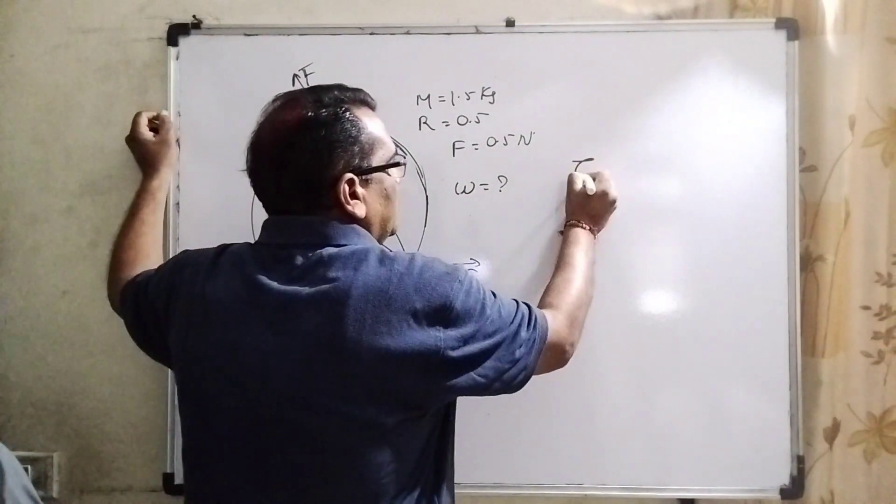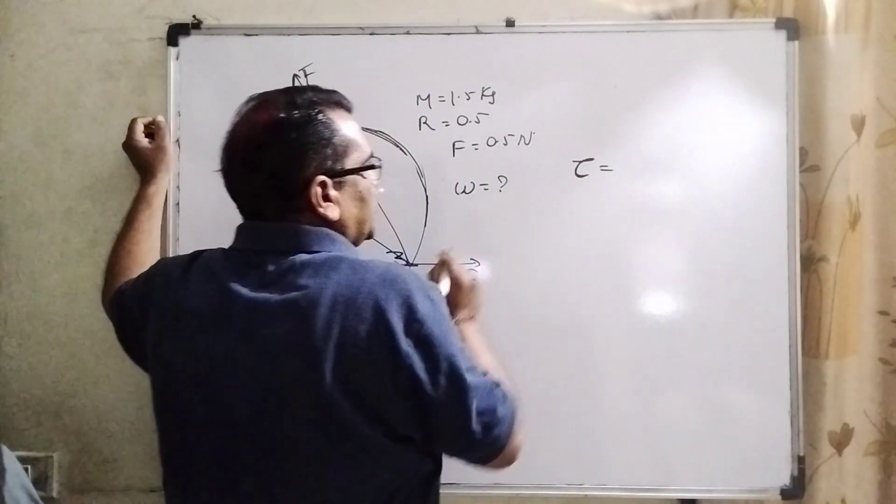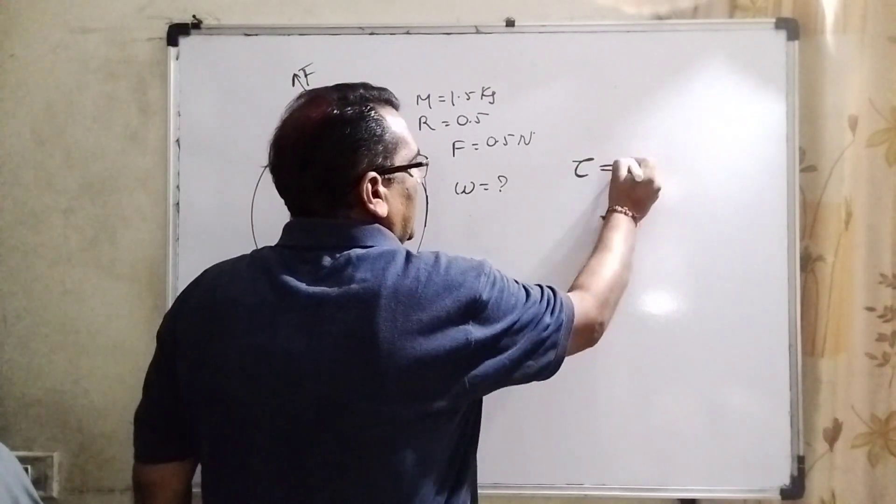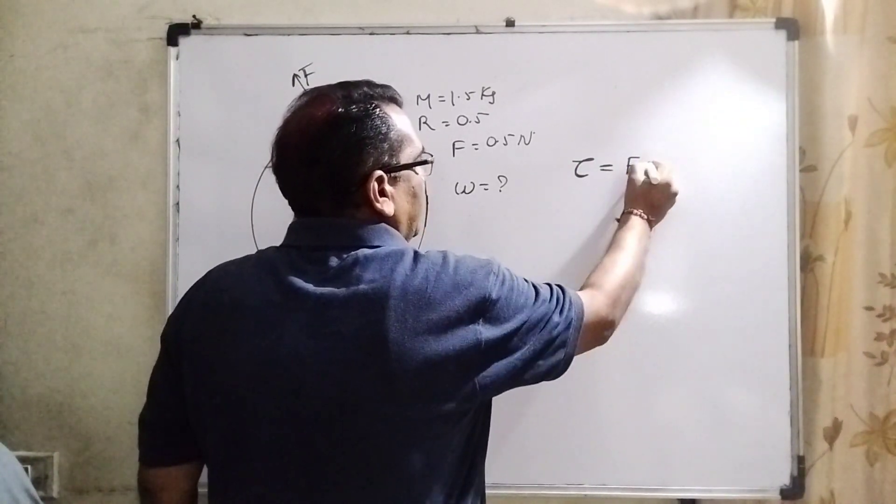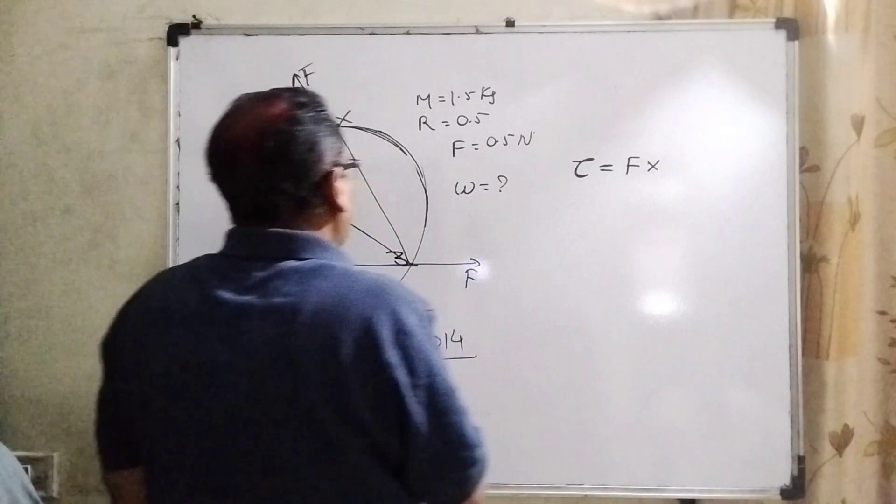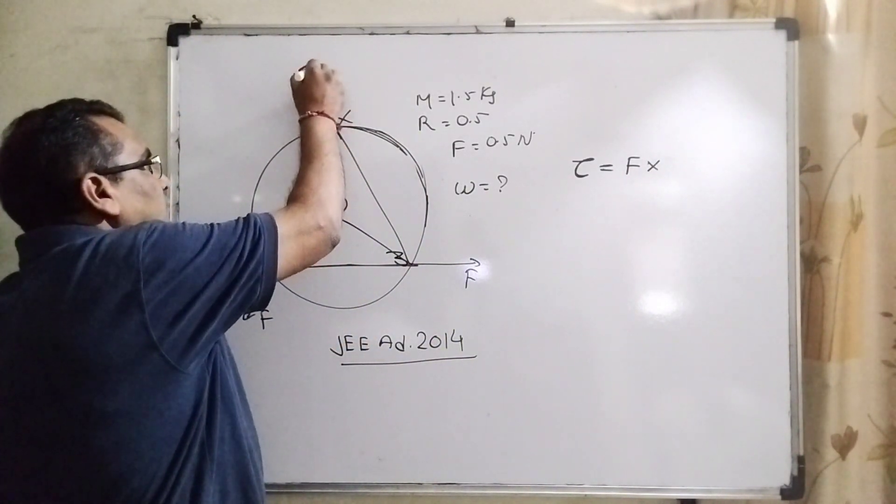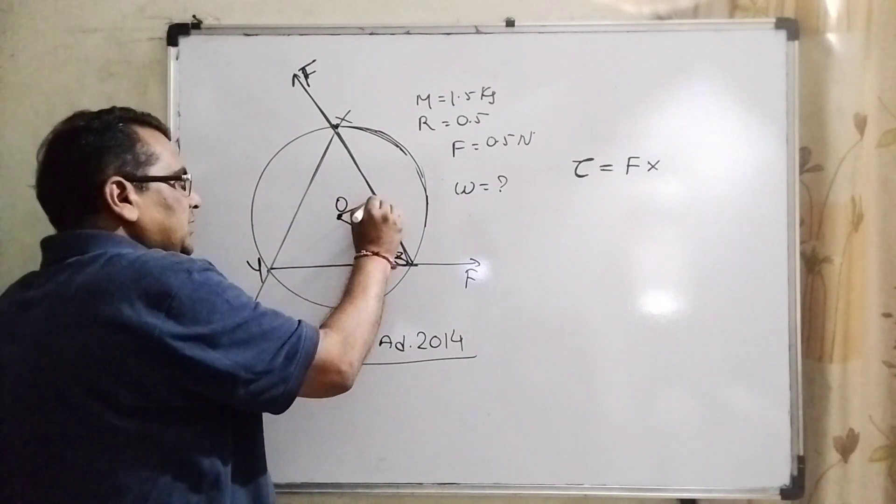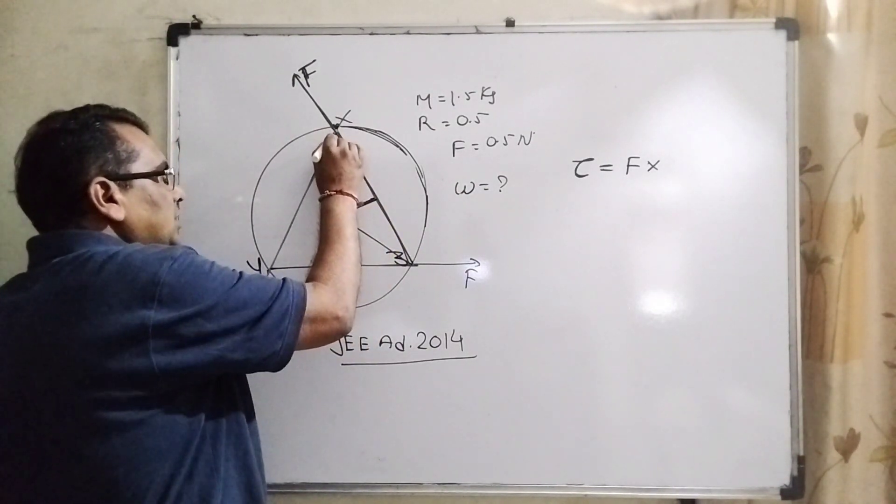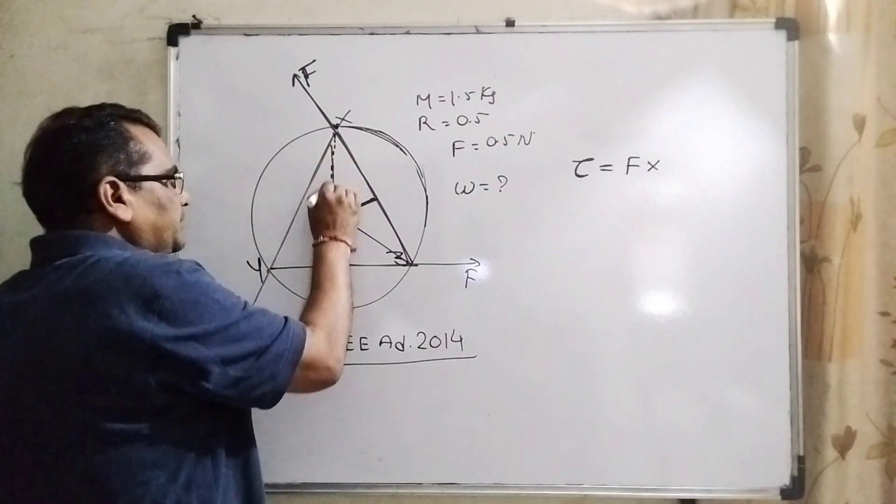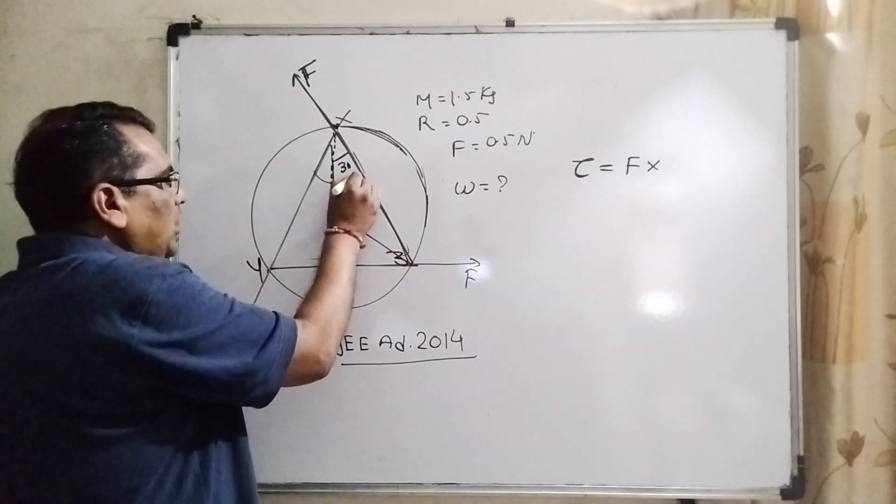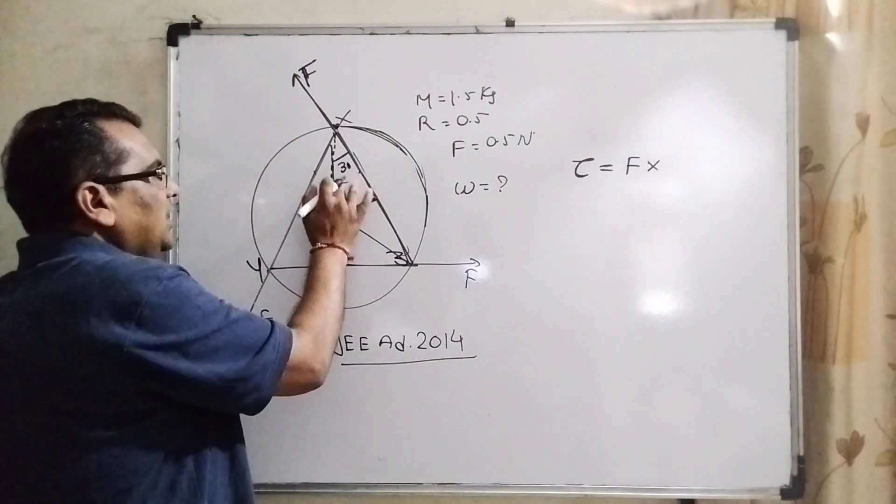Let us first find torque. Torque equal to, what is the formula? Torque equal to force and perpendicular distance. Then perpendicular distance from applying this force on this axis, what is the perpendicular distance? This is the perpendicular distance. Joining this line, you can see that it is 30 degrees because equilateral triangle full angle is 60 degrees and half angle is 30 degrees.